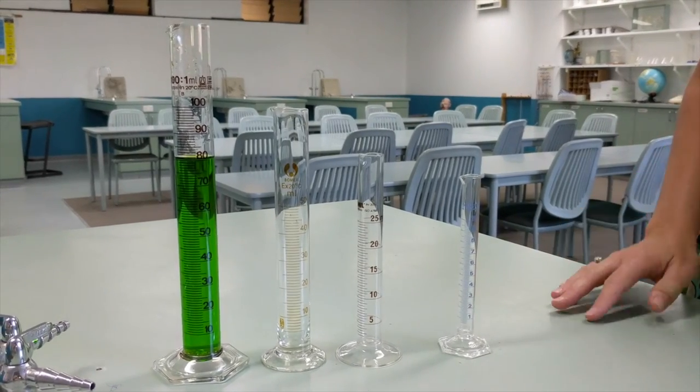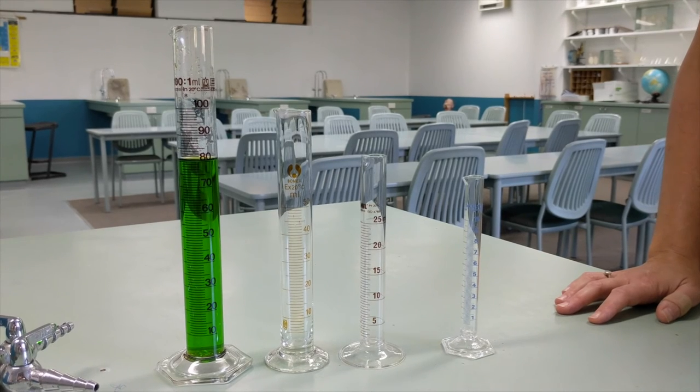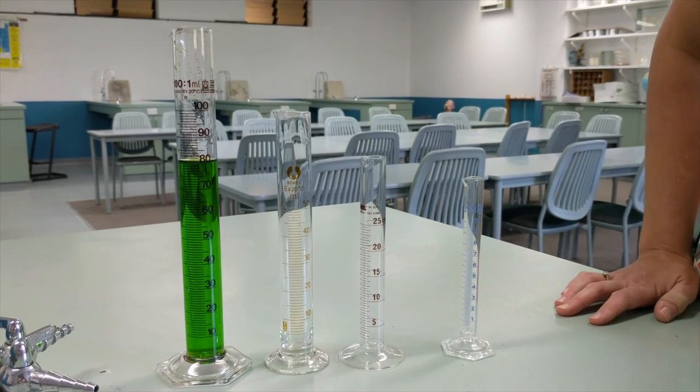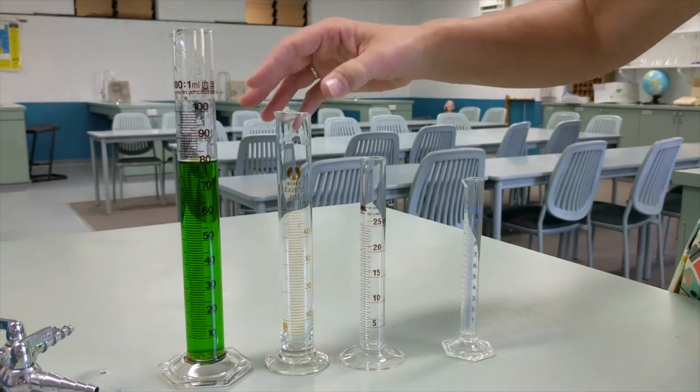As you can see, there are lots of different sizes of measuring cylinders. Use the smallest one to suit your needs. For example, if I needed to measure out 40 mils, I'd use this one.